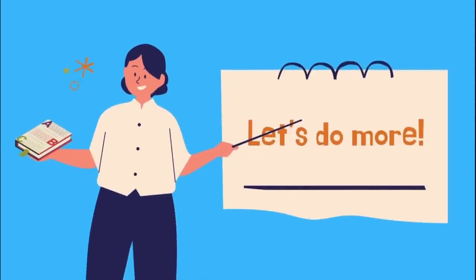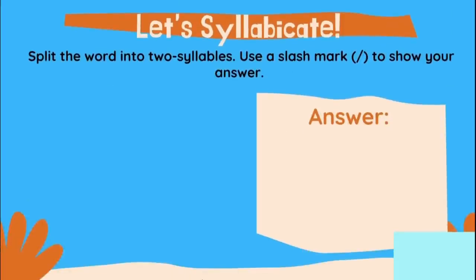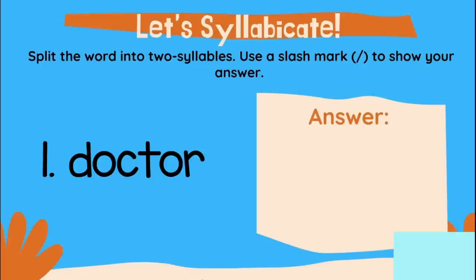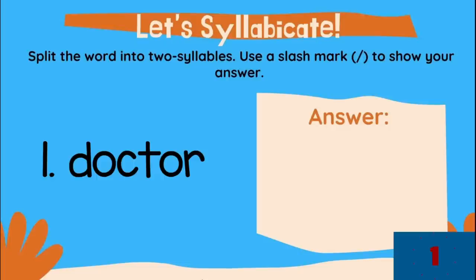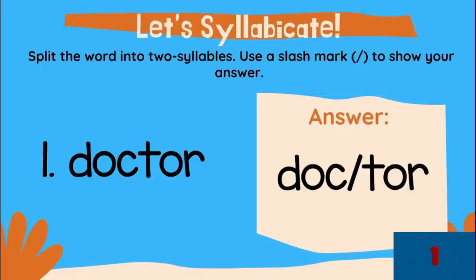Let's do more. Let's syllabicate. Split the word into two syllables. Use a slash mark to show your answer. Let's have our first word: doctor. Syllabicate the word doctor. Be careful, kids. Type now your answer in the comment box. And the correct syllabication of the word doctor is doc/tor. If this is your answer, you are great.